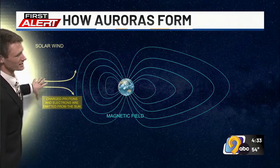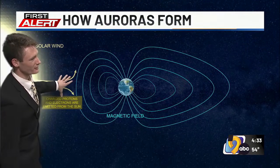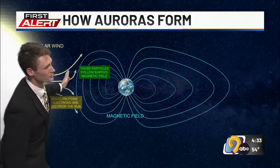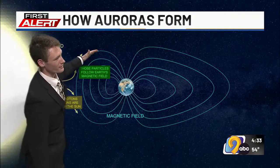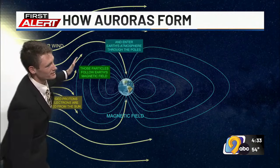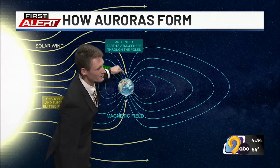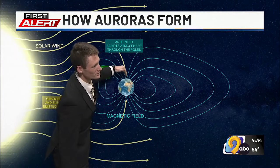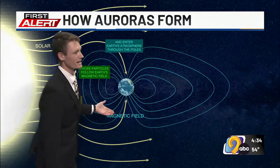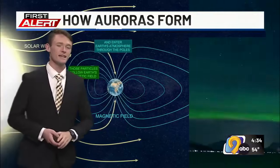known as a solar wind. These charged particles run into Earth's magnetic field, and a lot of times those particles will travel around the field. As they travel around the field, some of those particles end up entering into Earth's atmosphere through the poles — either the North Pole or the South Pole.